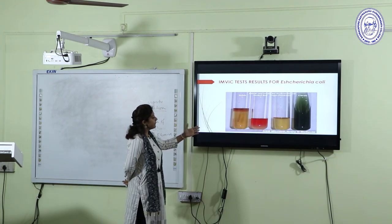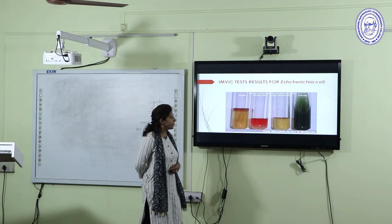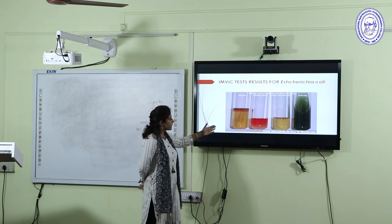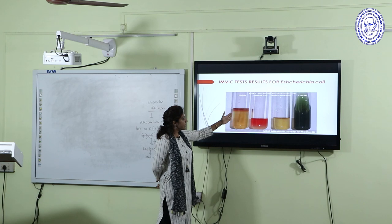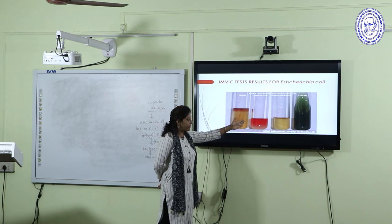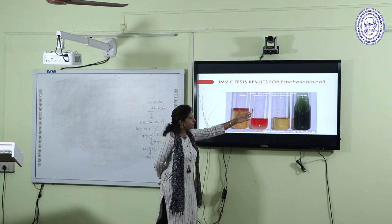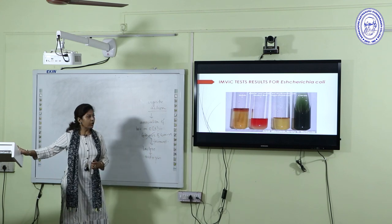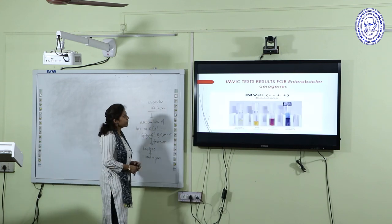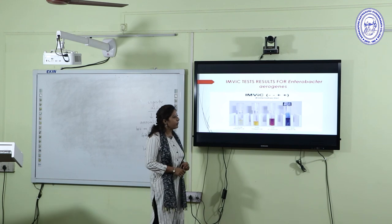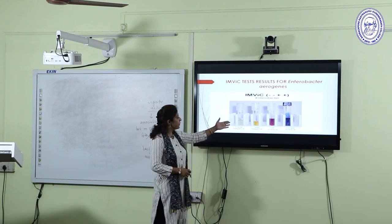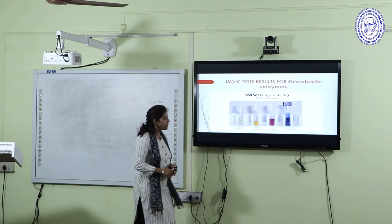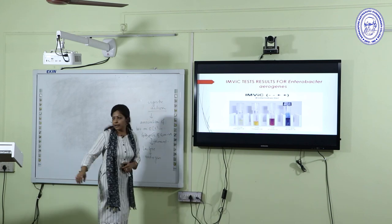The IMVIC test results for E. coli, a fecal coliform, are: Indole positive, Methyl Red positive, Voges-Proskauer negative, and Citrate negative. For Enterobacter aerogenes, a non-fecal coliform, the results are: Indole negative, Methyl Red negative, VP positive, and Citrate positive.